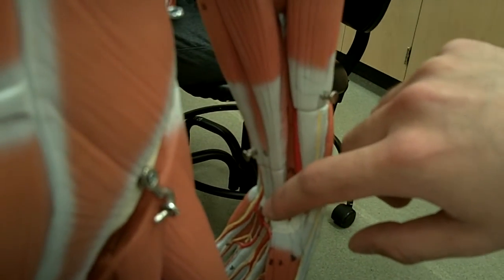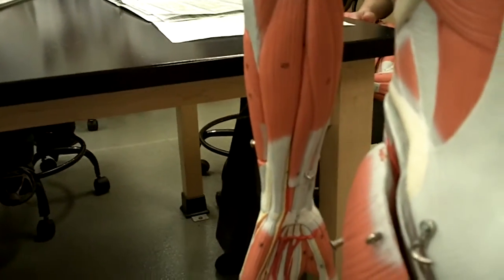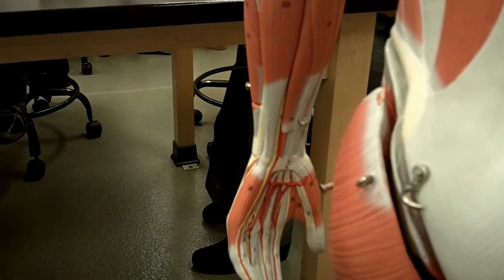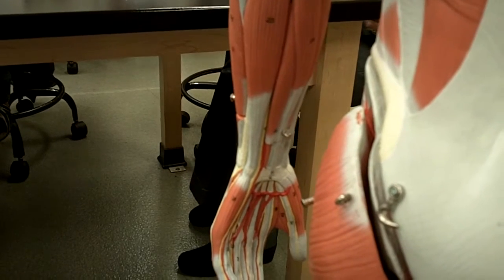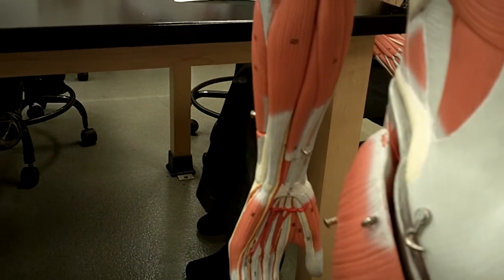The next muscle is the palmaris longus, here on the other side. This one is just inside here, it's hard to see. This also originates on the medial epicondyle of the humerus and inserts on the palmar aponeurosis. Its action flexes the wrist.